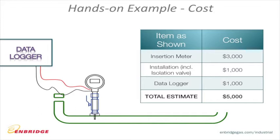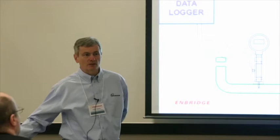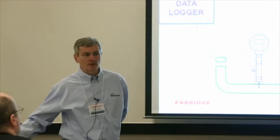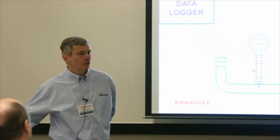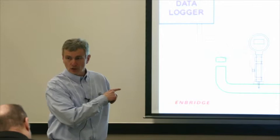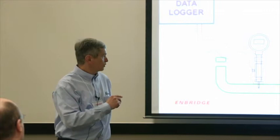That little data logger Jeff showed you—we only recently learned about it, and it's very capable. You can attach eight inputs—24-volt DC—for less than $1,000. I put $1,000 for round numbers. $1,000 for installation and isolation valve that allows you to pull the meter and close the line. Insertion meters are about $3,000, depending on what and where you want to measure.